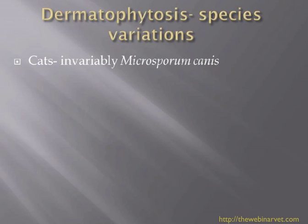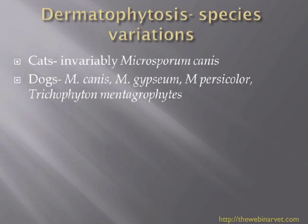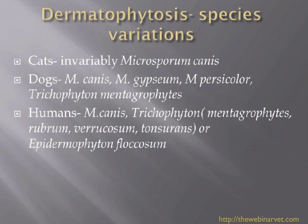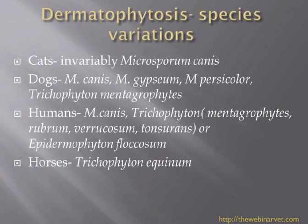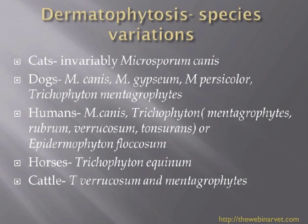You may be able to tell the owner that they need to go and get their athlete's foot sorted out. Dogs get a number of species: Microsporum canis, gypseum, persicolor, and Trichophyton mentagrophytes. Humans can also get a number — we see M. canis quite commonly in practices where somebody has acquired a couple of cats and also has lesions on them, so it's worth asking those questions and making owners aware it is a zoonotic disease. Horses tend to get Trichophyton, cattle get Trichophyton verrucosum and mentagrophytes, and sheep also get Trichophyton verrucosum.